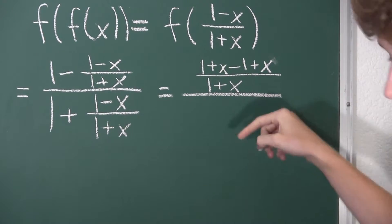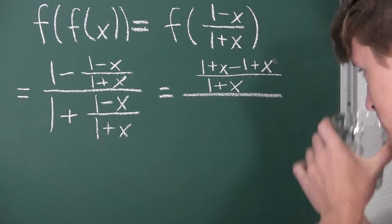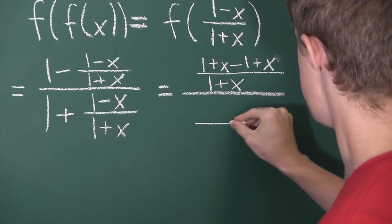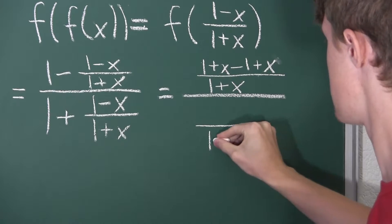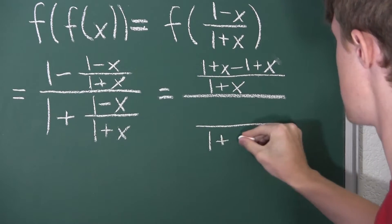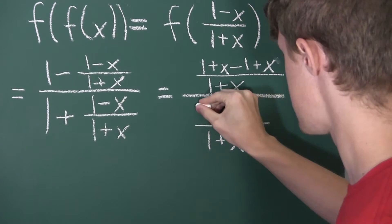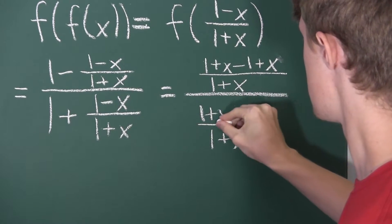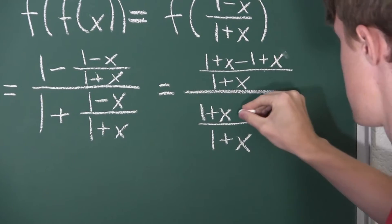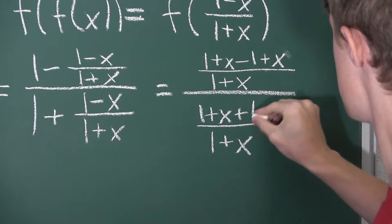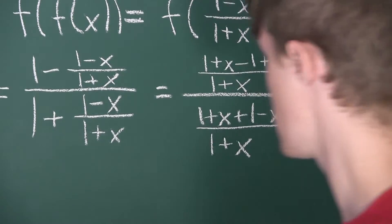For the bottom fraction, we likewise want the same denominator. We again have 1 plus x in the denominator, and for the 1, we write 1 plus x over 1 plus x. So we have 1 plus x plus 1 minus x in the numerator of the bottom fraction.